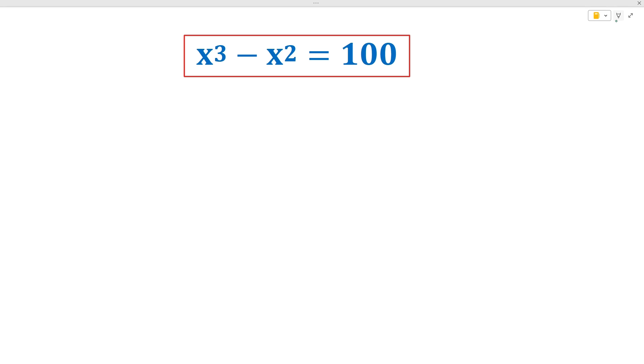Hi and welcome to the Mathemagic channel. How would we solve x cubed minus x squared equals 100? So this is a cubic. A cubic equation is third degree and because it's a cubic equation it should have three solutions.